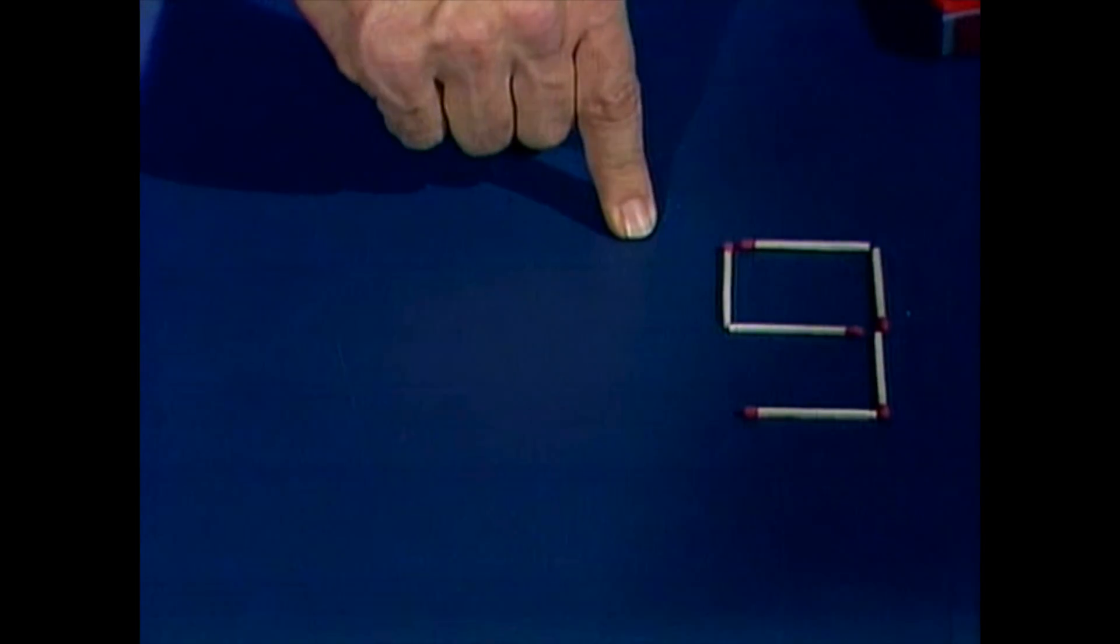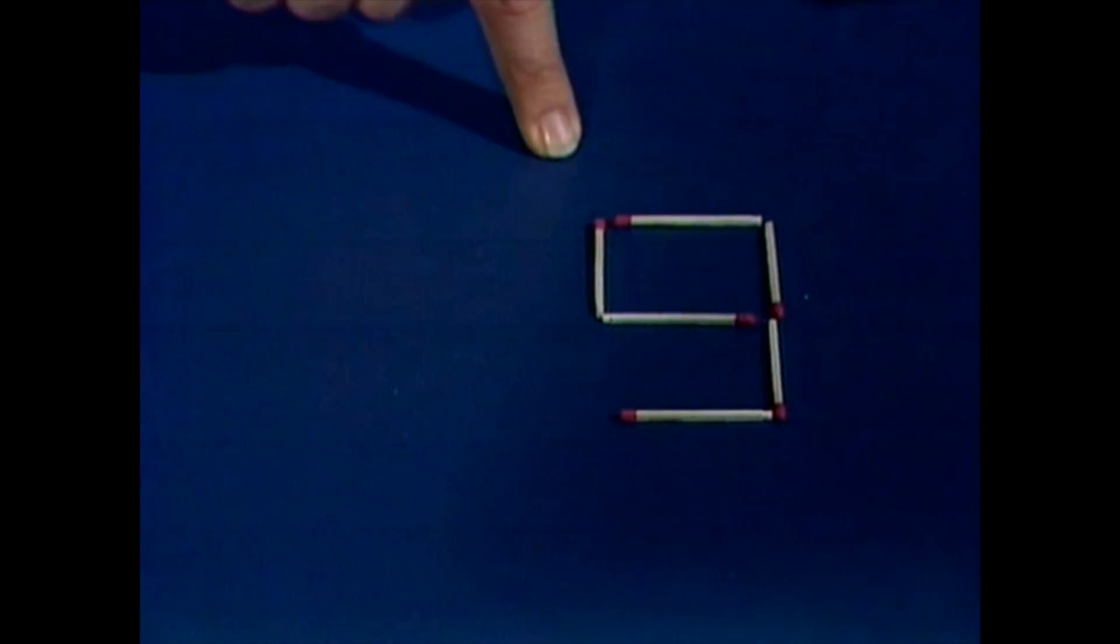How can we get a number six by taking away three? Well, that's easy. What does that make? It's a nine. Nine take away three. Everybody knows that's six.